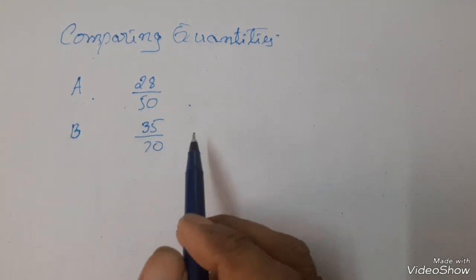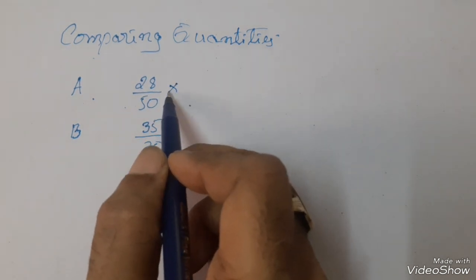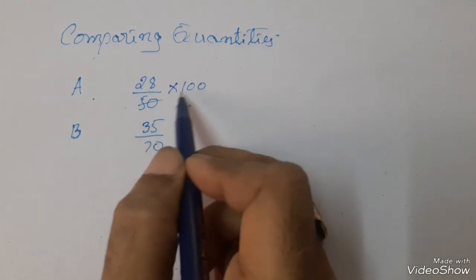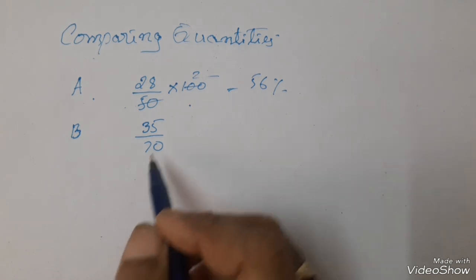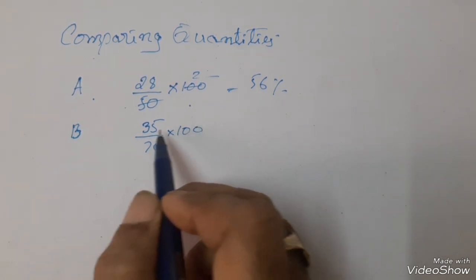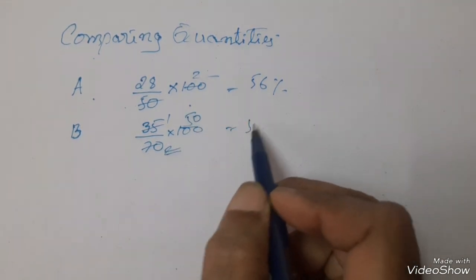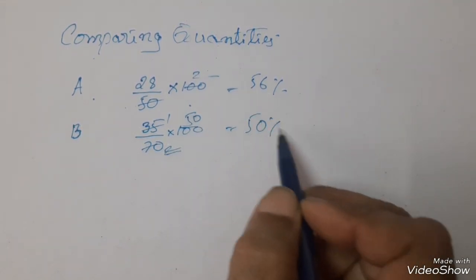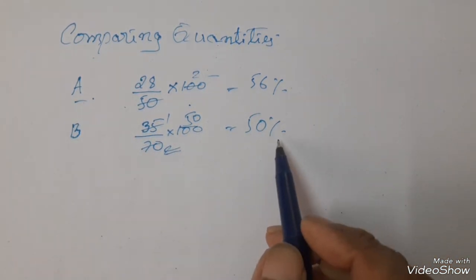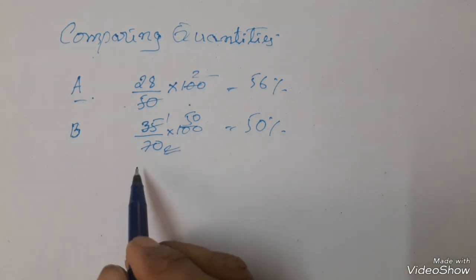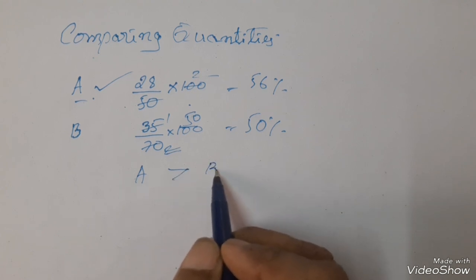You convert both into percentages. How can you convert into percentages? Simply multiply with 100. So A gets 56% and B gets 50%. So A got more marks than B.